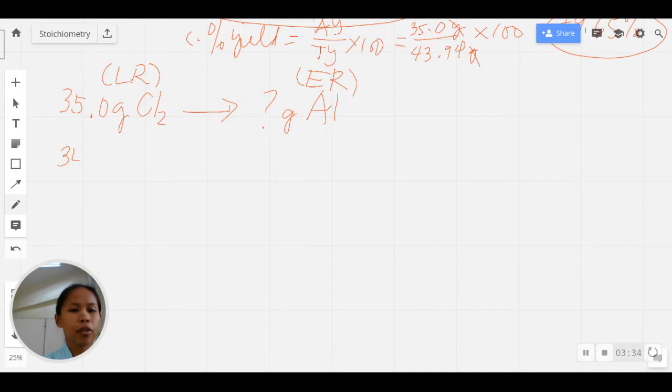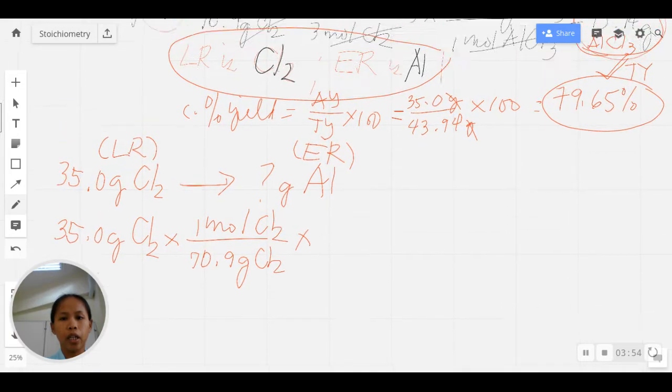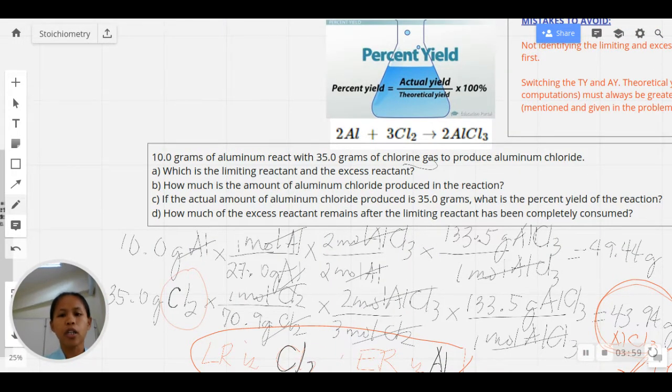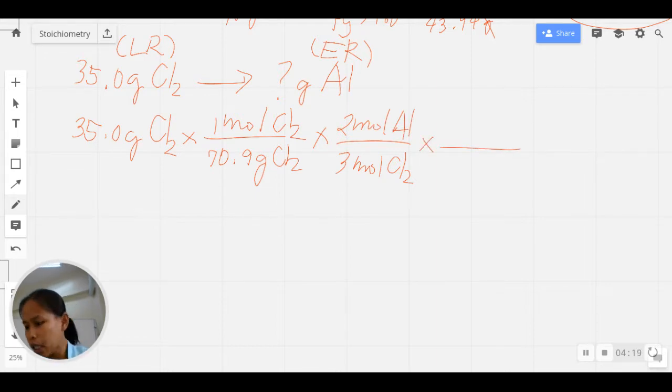Let us now show this solution. We have 35.0 grams of CL₂. Molar mass of CL₂ first, which is 70.9 grams of CL₂ for every one mole CL₂. Next, we have to go back to our chemical equation. What is the mole ratio between CL₂ and Al? It is 2 is to 3, so that's three moles of CL₂ for every two moles of Al. Then this will be followed by the molar mass of Al, which is 27.0 grams Al for one mole of Al.